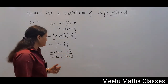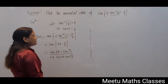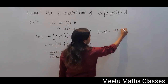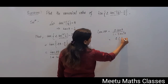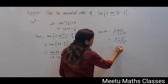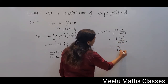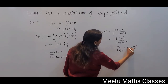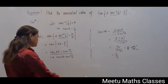We know the value of tan(π/4) is 1, but we also need to find the value of tan 2θ. Since tan θ = 1/5, tan 2θ = 2·tan θ / (1 − tan²θ) = (2 × 1/5) / (1 − 1/25) = (2/5) / (24/25), which gives tan 2θ = 5/12.